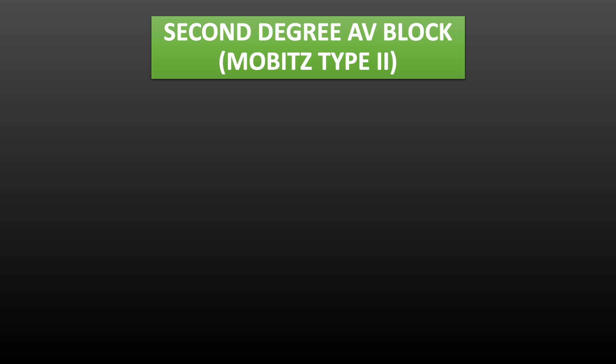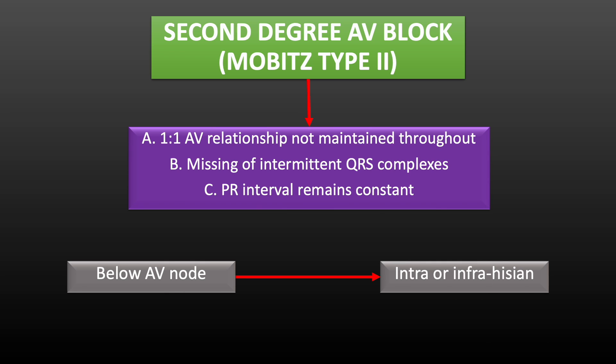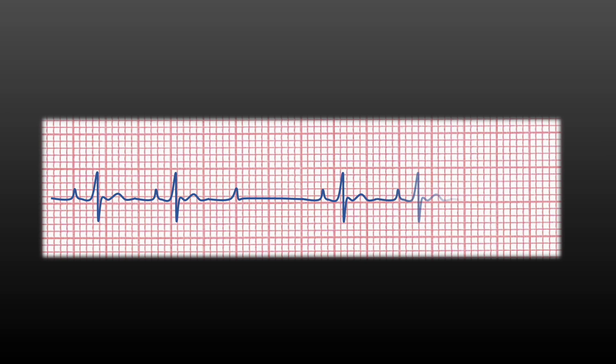Coming to Mobitz type 2 second degree AV block. The criteria for diagnosis of type 2 AV block: 1-to-1 AV relationship is not maintained throughout because of intermittent dropped QRS complexes, occurring due to intermittent failure of AV conduction. The feature which differentiates this from type 1 is that here PR interval remains constant, unlike the gradually prolonged PR interval seen in type 1 AV block. Mobitz type 2 AV block is always pathological and block typically occurs below AV node, either at the bundle of His or bundle branches. Hence the level of AV block is intra or infrahisian.